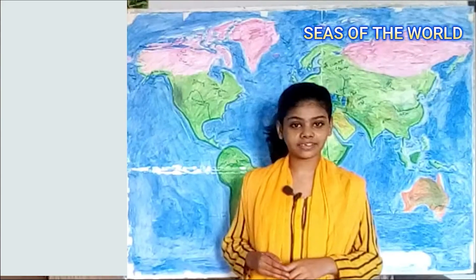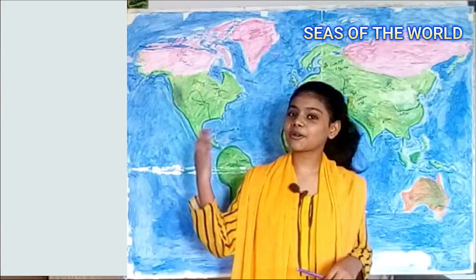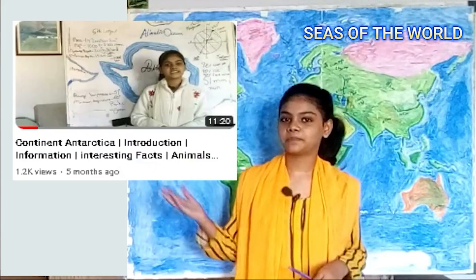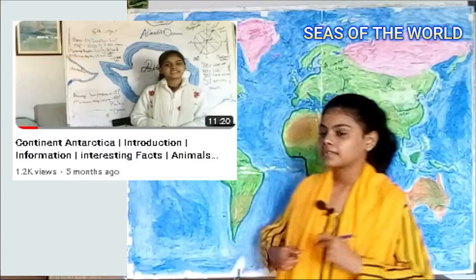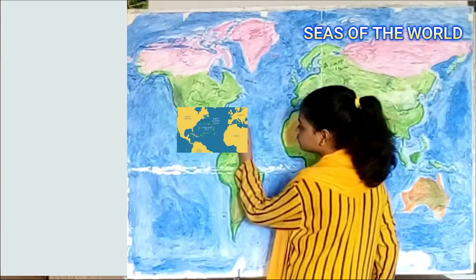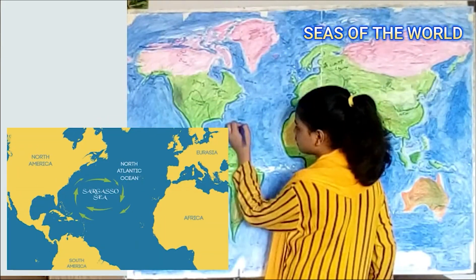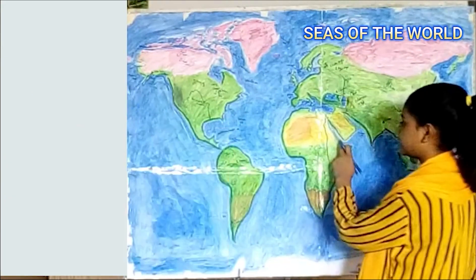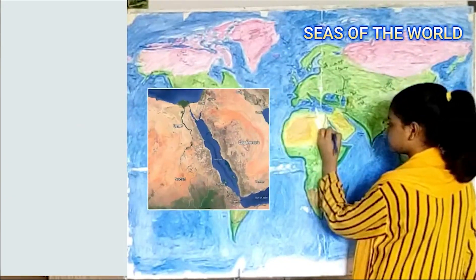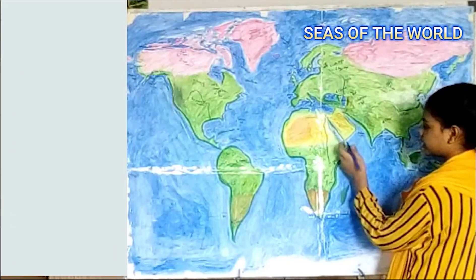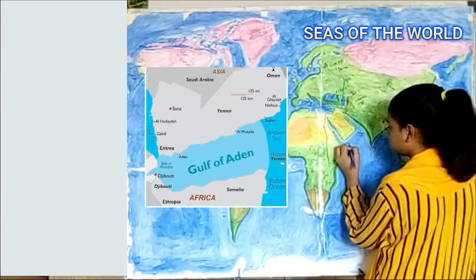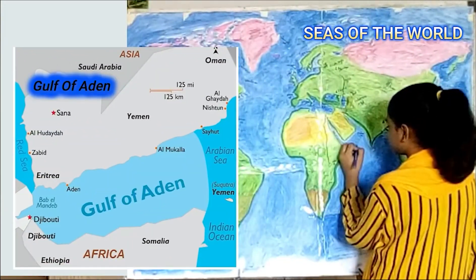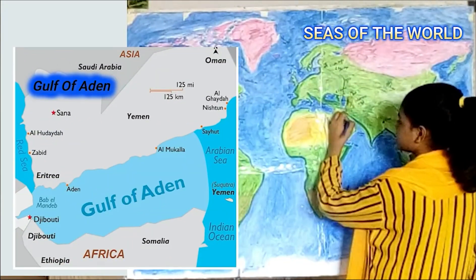If you want to see more seas of Antarctica, check out my list video. Here is Sargasso Sea. Here is Red Sea. Here is Gulf of Aden. Here is Persian Sea.